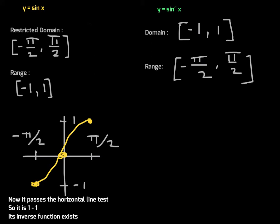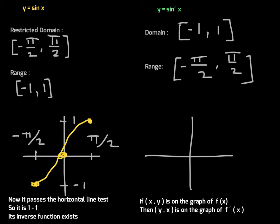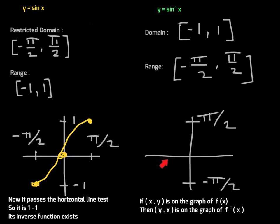When graphing inverse functions, remember that if (x, y) lives on the graph of a function, then (y, x) lives on the graph of its inverse. All you have to do is swap the coordinates. We know how to scale the axes for inverse sine of x: the x-axis for sine goes from negative π/2 to positive π/2, so the y-axis for inverse sine will go from negative π/2 to positive π/2. The y-axis for sine goes from negative 1 to 1, so the x-axis for inverse sine will go from negative 1 to 1.